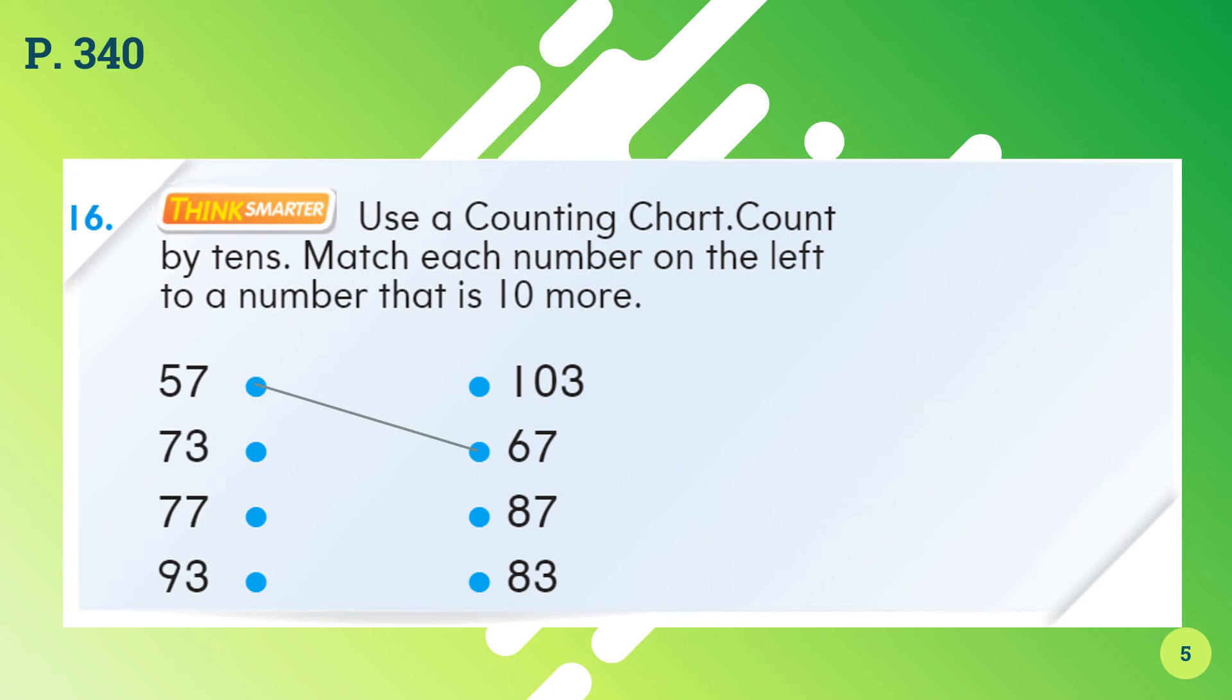Now if you add 10 to 73, what do you get? You get 83. If you add 10 to 77, what should you get? You will get 87. And finally, what shall you get if you count 10 more starting from 93? You should get 103. If you already knew all the answers, good job.